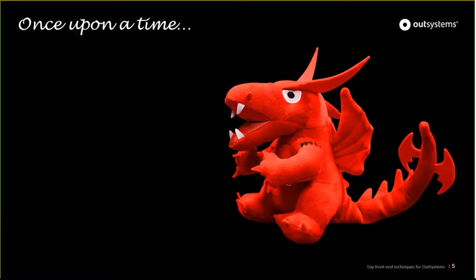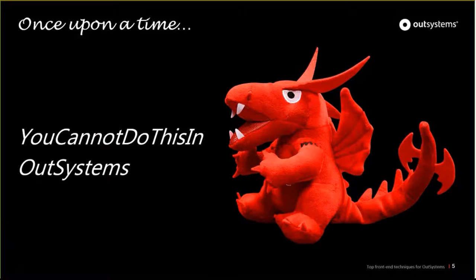Once upon a time there was a dragon, and the name of the dragon was 'you cannot do this in OutSystems.' This dragon was terrible and every developer was afraid of it. Every time you'd start a project that looked like a normal or very interesting website, the developer would be afraid the dragon would attack and make them unable to deliver the project. So in order to fight this dragon, I've put together an agenda.